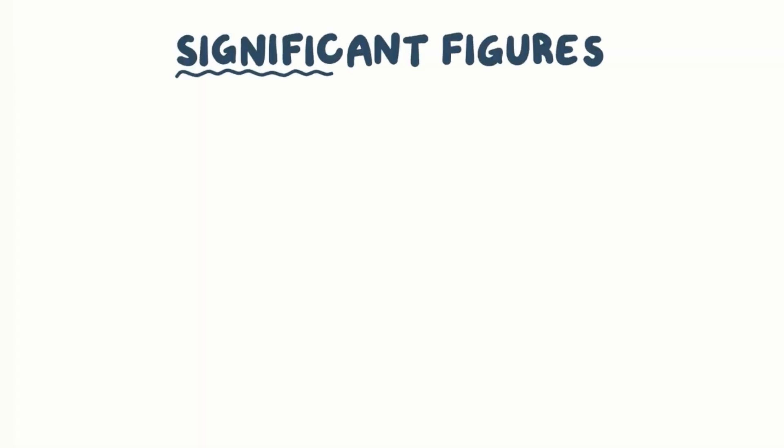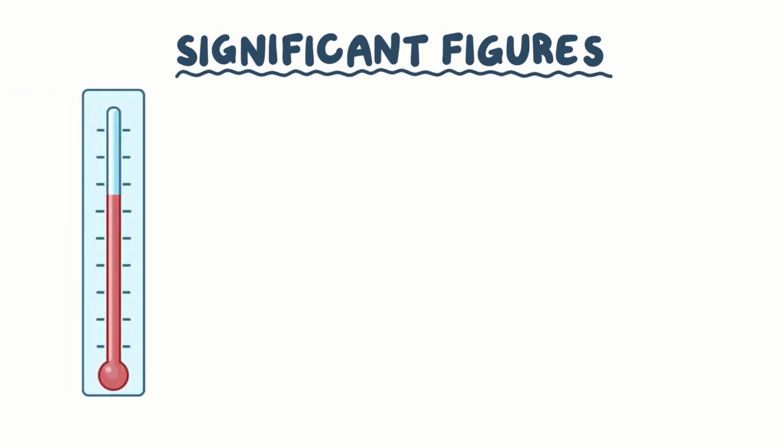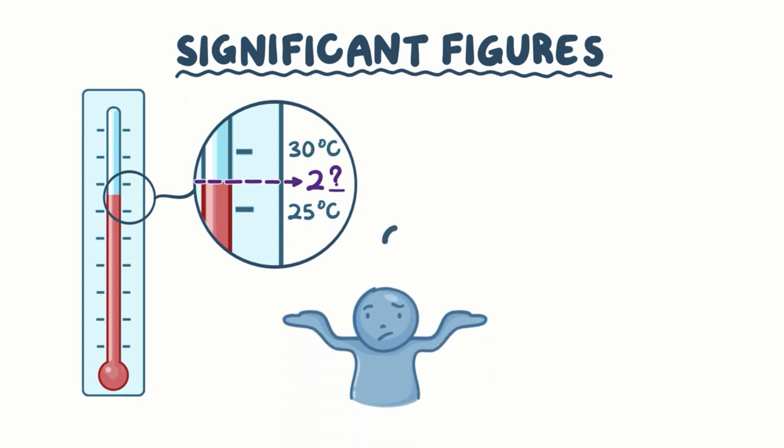Significant figures are important for calculations involving measurements. For example, we can look at a thermometer that has markings of 5 degrees Celsius. If we zoom in and see a measurement that's between 25 and 30, you have to guess on the second digit. It might look like it's 26 or 27, it's hard to say. So if it is 27 degrees, then that measurement has two digits. The first digit we know for certain, and the second digit is estimated and therefore uncertain, but both are considered significant figures.